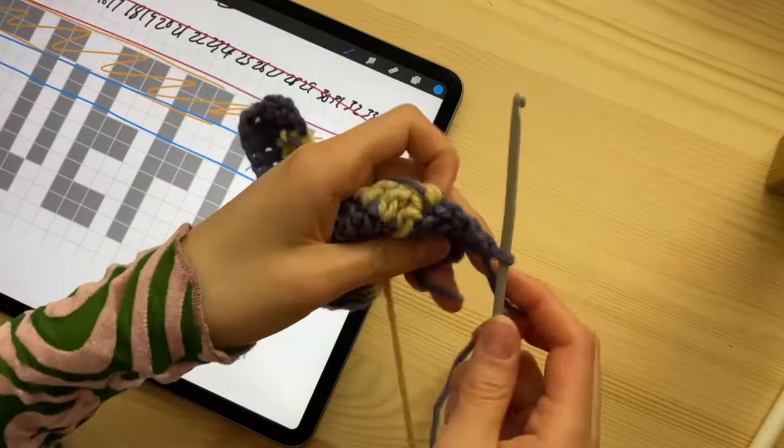So, I have Stitch Fiddle open on my iPad. And, here, I just clicked Create New Chart. This is a free website, so you can do things for free. So, I always click Crochet. Crochet with Colors. No preference on my yarn. And, then, I do Empty Chart. And, then, you can choose your grid size, but I just make it really large, so I can kind of do whatever I want. And, Create Chart.